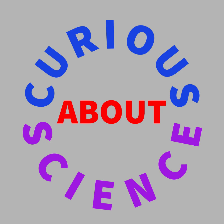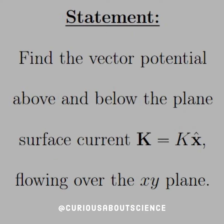We've got a pretty quick problem from an example that we've already done in the book, so we'll just attack it. The statement reads: find the vector potential above and below the plane surface current k equal k x-hat, flowing over the x-y plane.